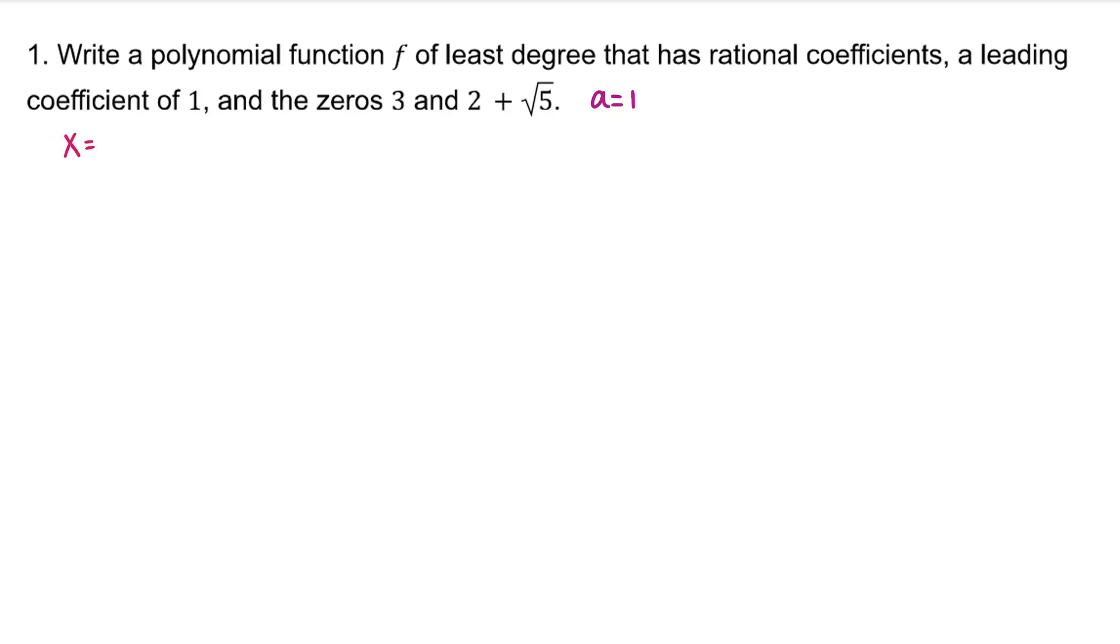A leading coefficient of 1 means a equals 1, a zero of 3 means x equals 3, x equals 2 plus root 5, and if 2 plus root 5 is a zero of our polynomial, by the irrational conjugates theorem, 2 minus root 5 must also be a zero.